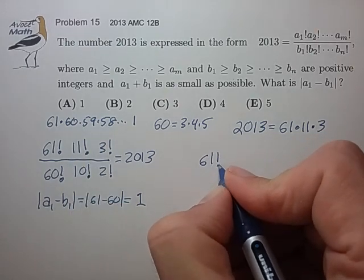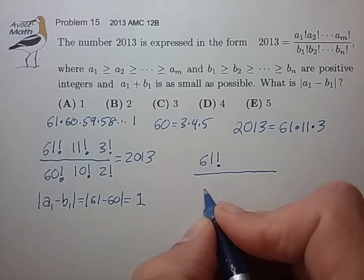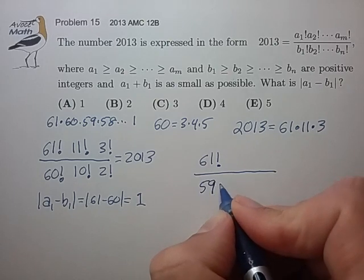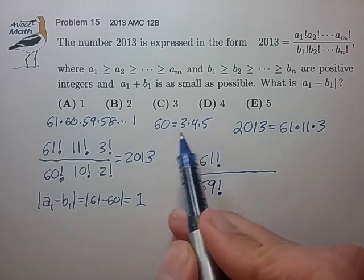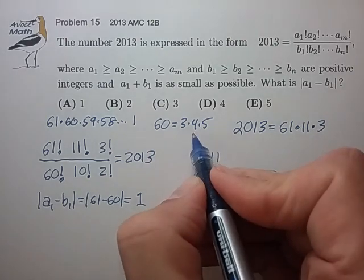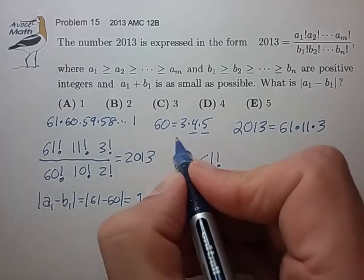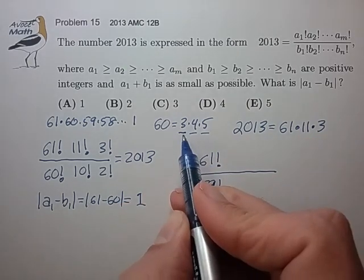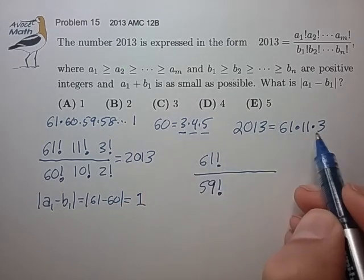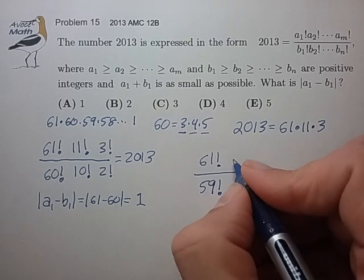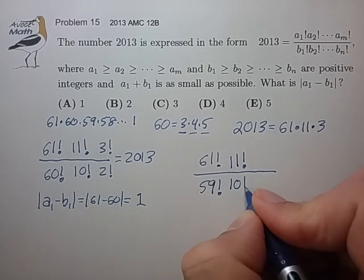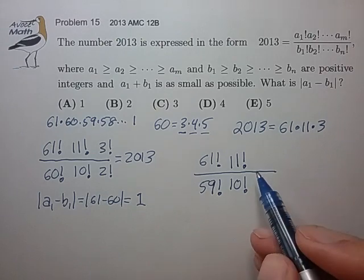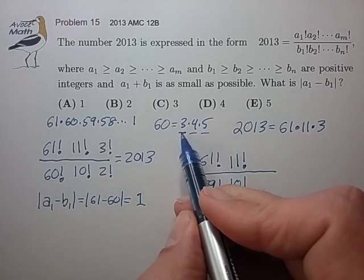Let's put 61 factorial up top. And now let's put 59 factorial on the bottom. So now we have a factor of 60 up top that is unnecessary, or at least the 4 and the 5 are not needed. The 3 actually is needed, so we can probably keep that. Now we do have to introduce the factor of 11. Let's just do it the same way we did before. 11 factorial, 10 factorial. And now we have the factor of 3 that we want.